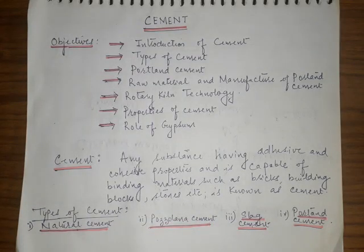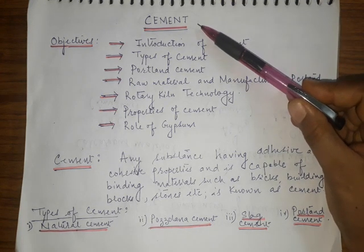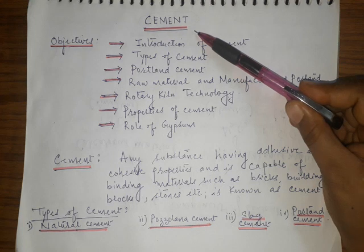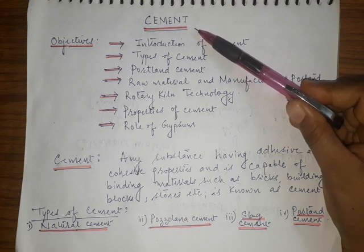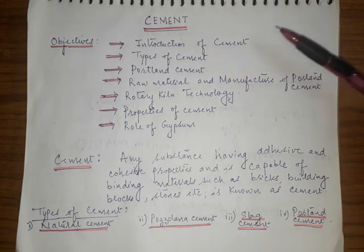In this e-lecture we will be studying about cement. Cement, as we all know, is a very important construction material mainly required for binding building materials. Cement is a type of ceramic material which is manufactured by heating its components at a very high temperature.